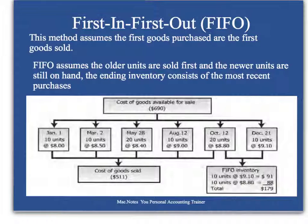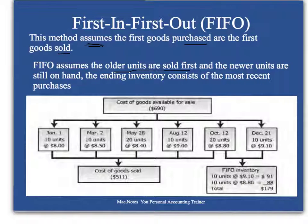To begin with, FIFO assumes that the first goods purchased are the first goods sold. Therefore, the older units are sold first and the newer, recently purchased units are still on hand in ending inventory.